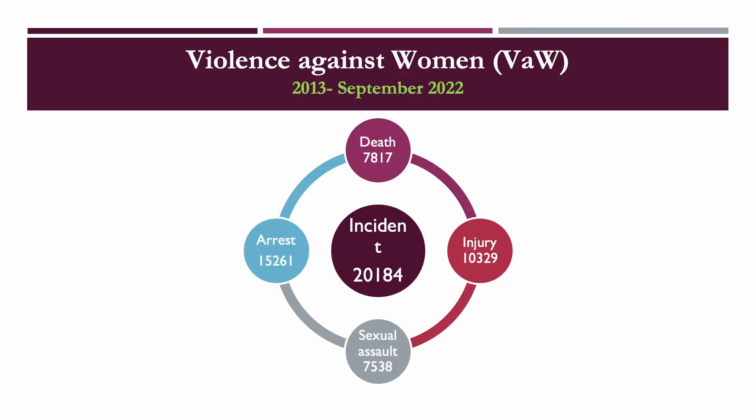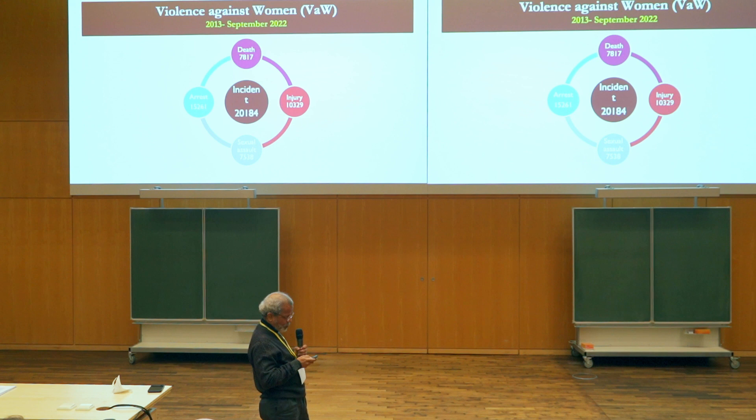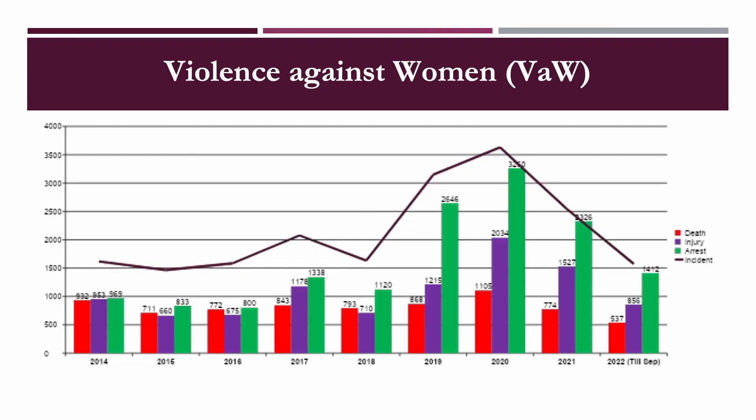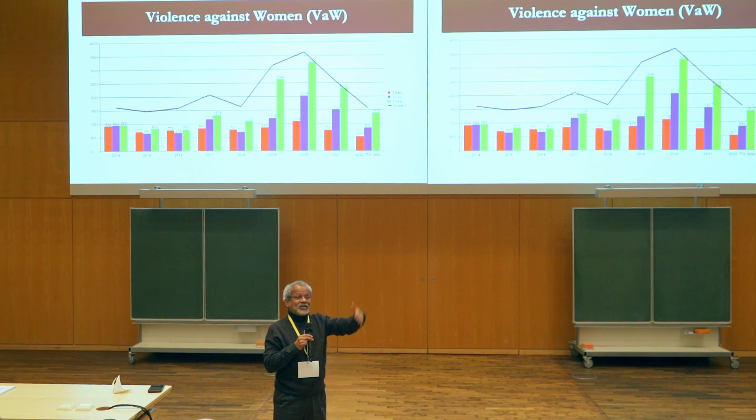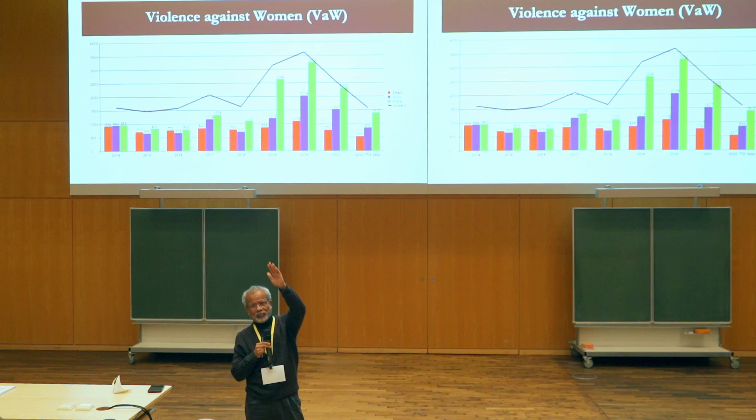Like violence against women — this is over 10 years of data, you can see from 2013 to September 2022 — the number of deaths in all those years is 7,817. Death is something very difficult to hide; injuries and incidents may differ, but death is something you can be pretty sure is quite robust. When you bring them to a scale level, you can see the trend. In 2018 and 2021 it really went up and then it goes down — it's not just going up and up, nor just going down.